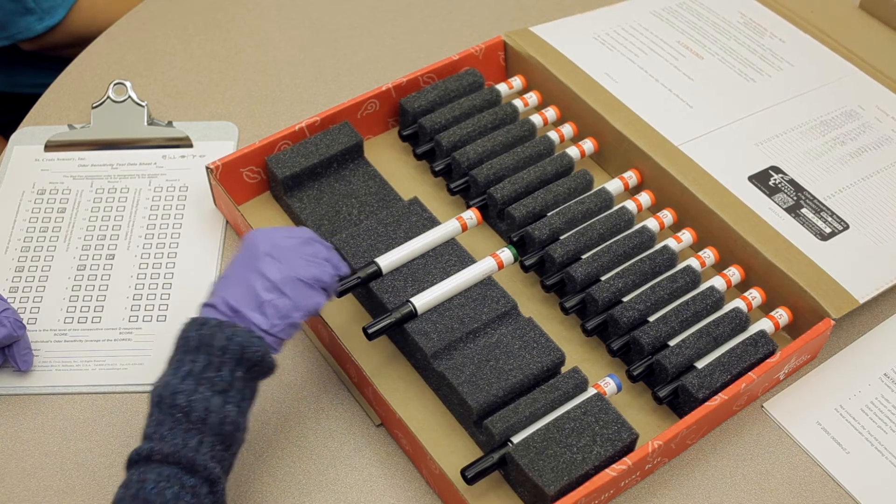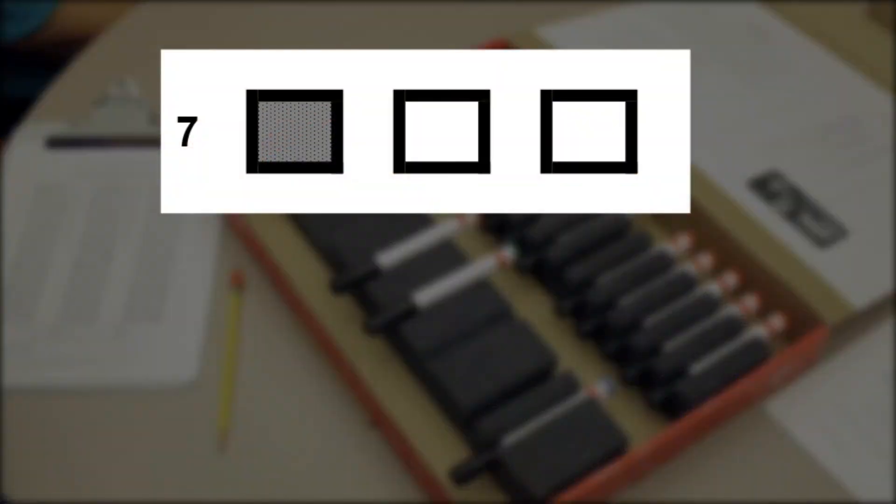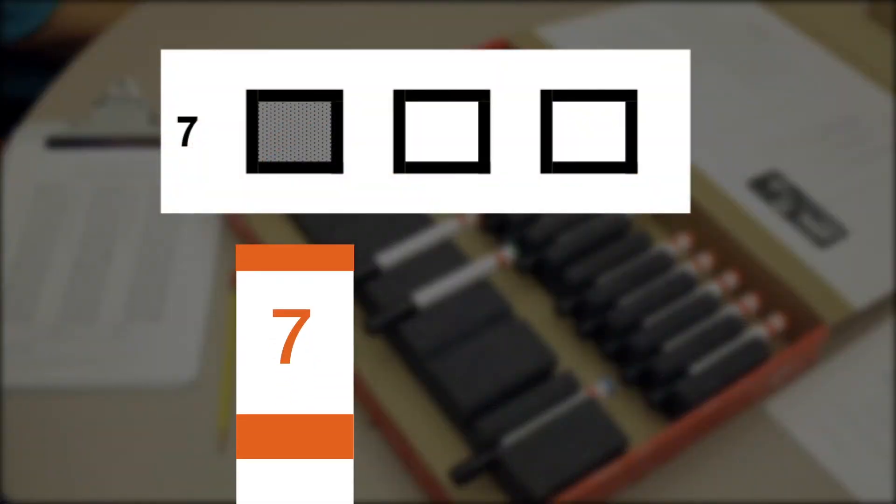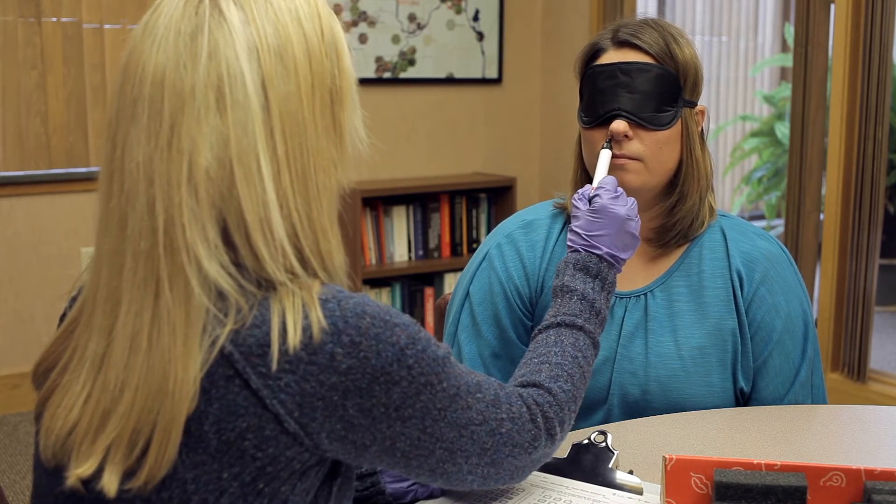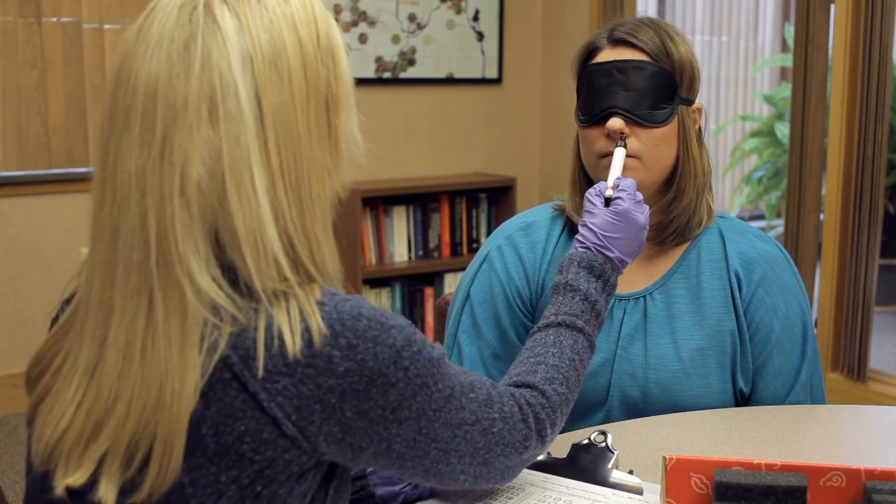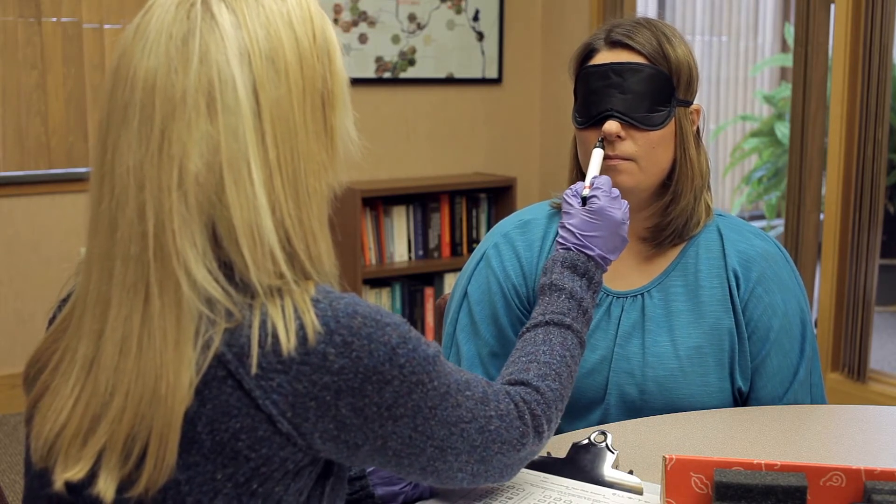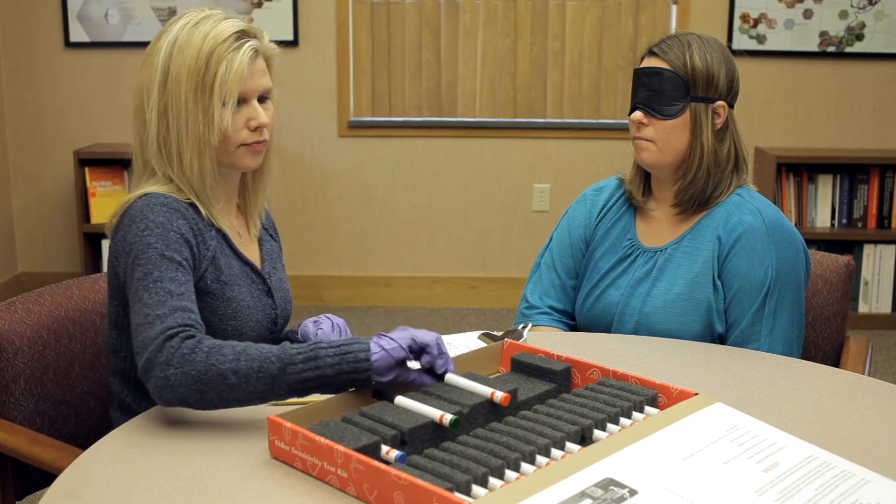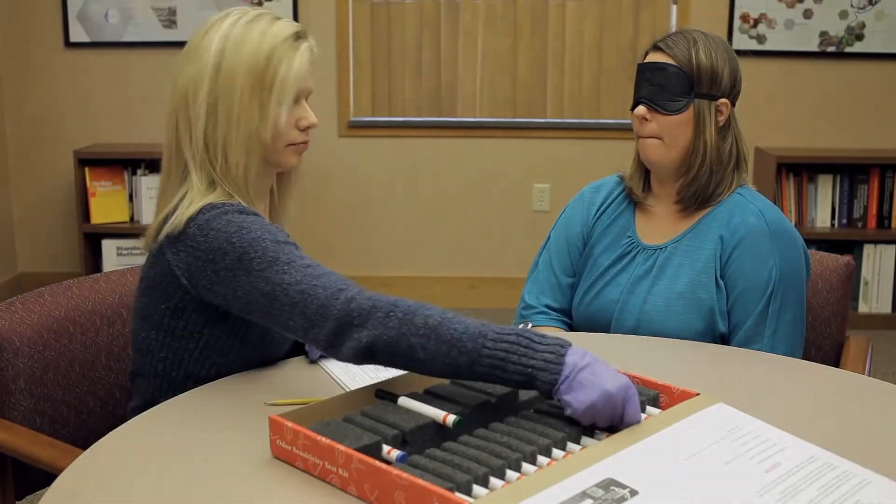When the test administrator presents the number seven pen sequence, the number seven pen is placed in the left position, as seen by the shaded square on the datasheet. One, sniff. Sniff. Sniff. Two, sniff. Sniff. Sniff. Three, sniff. Sniff. Which pen? I detect number one. The test administrator records the response and then sets up the next pen sequence and continues presenting the pens.